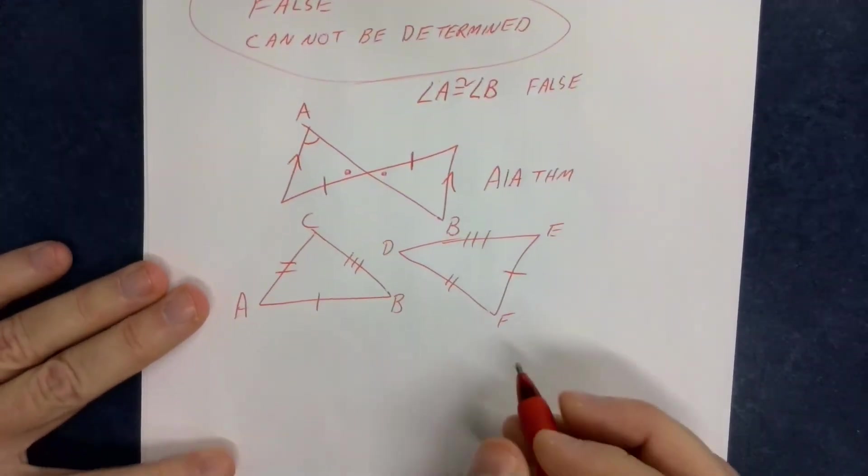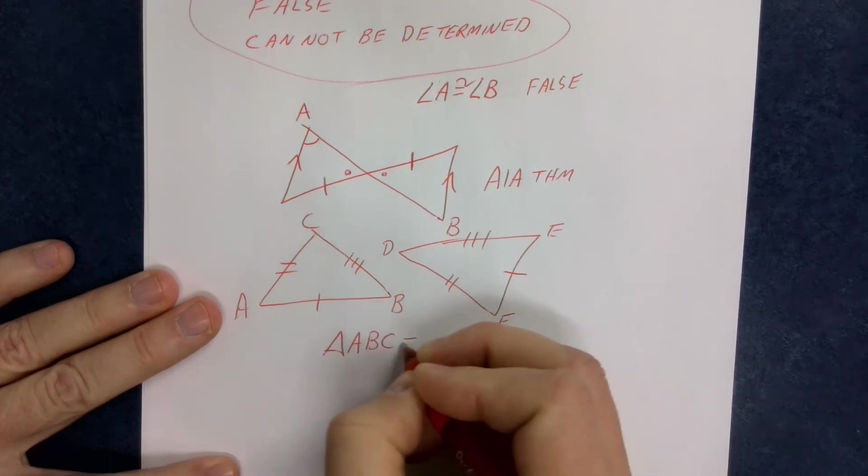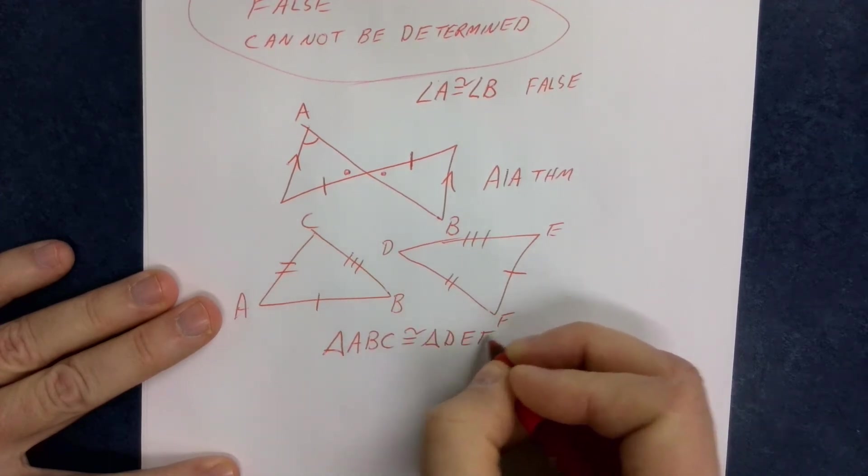I want to make sure we're clear on this. Is triangle ABC congruent to triangle DEF?